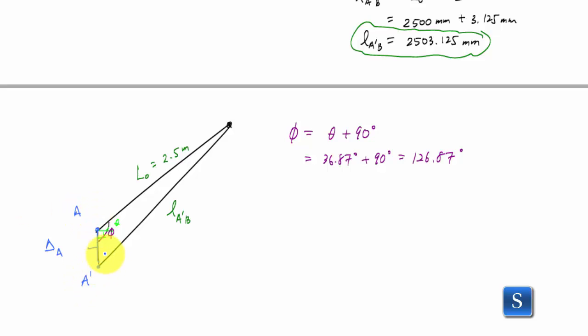And so now if I use the law of cosines and relate it to this, I would have LA prime B squared is equal to L zero squared plus delta A squared minus 2 times L zero times delta A cosine of 126.87 degrees.